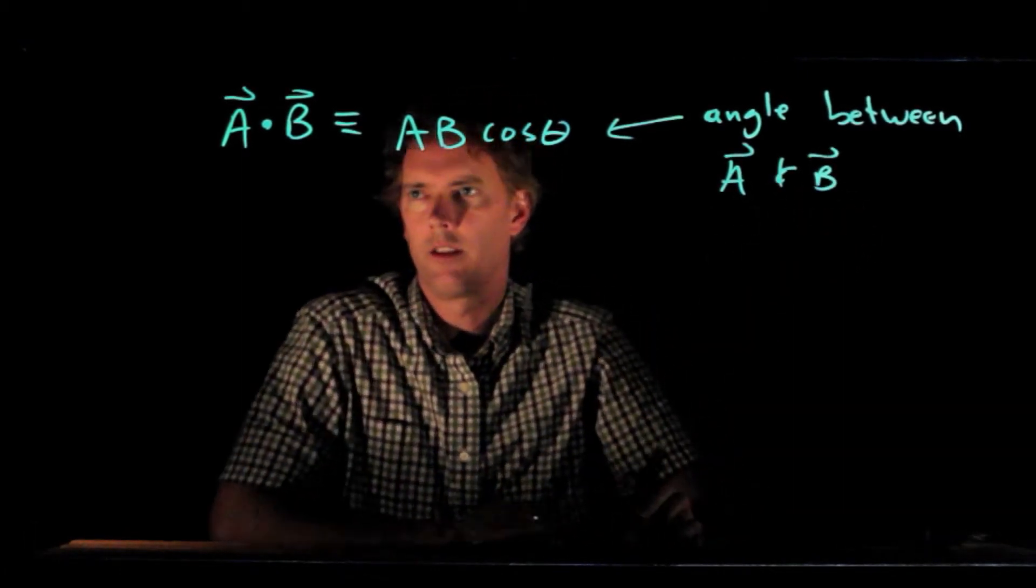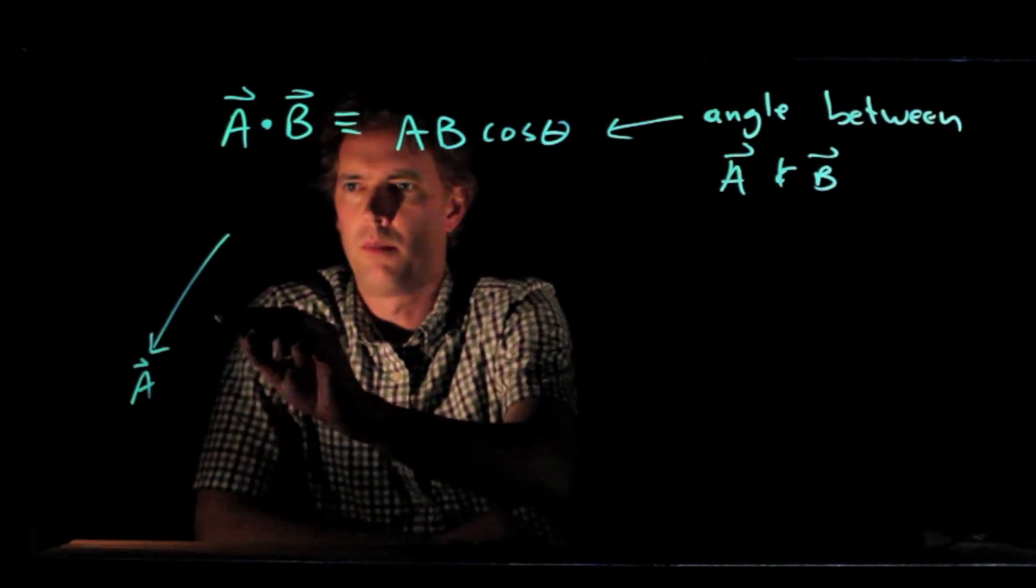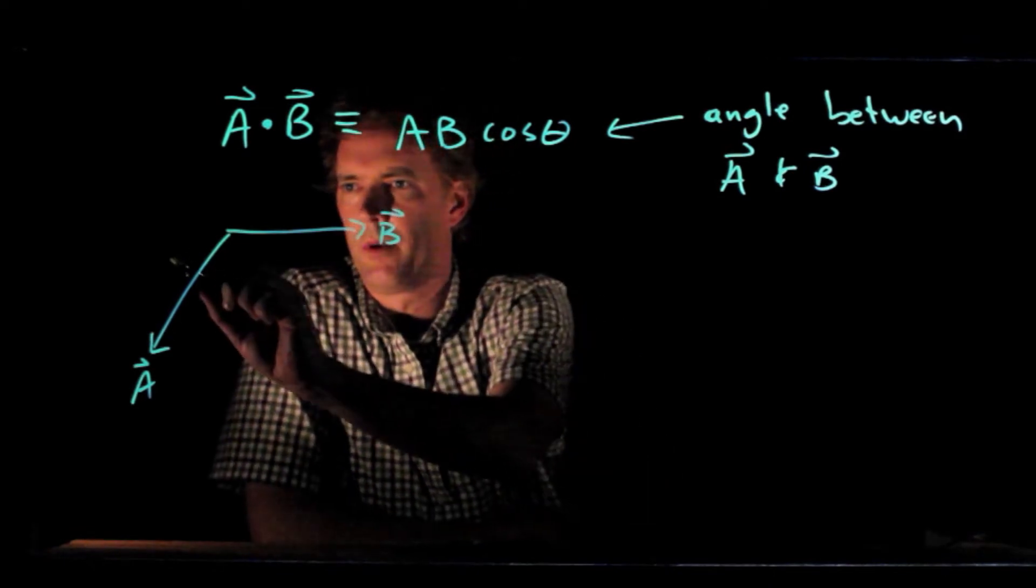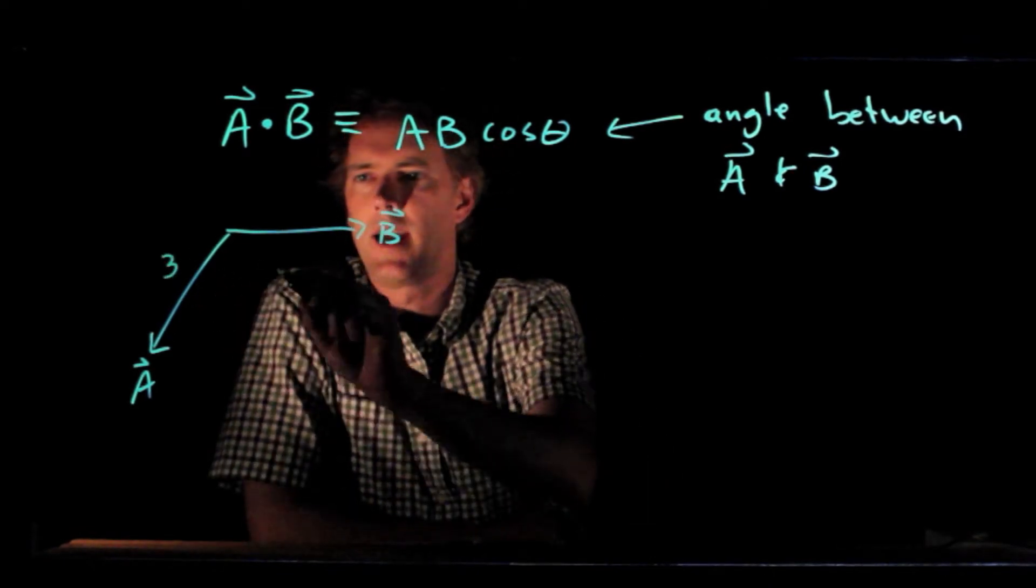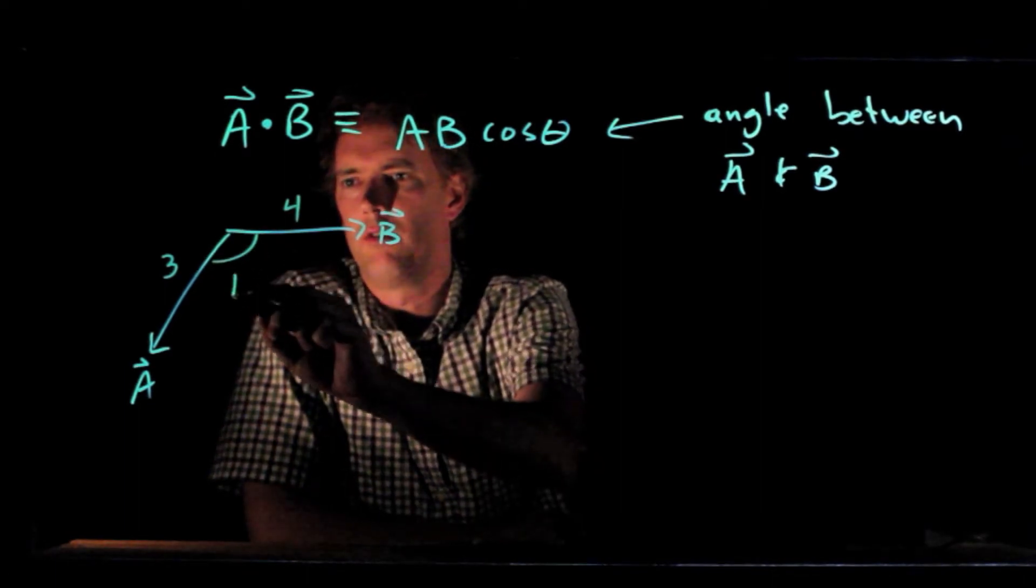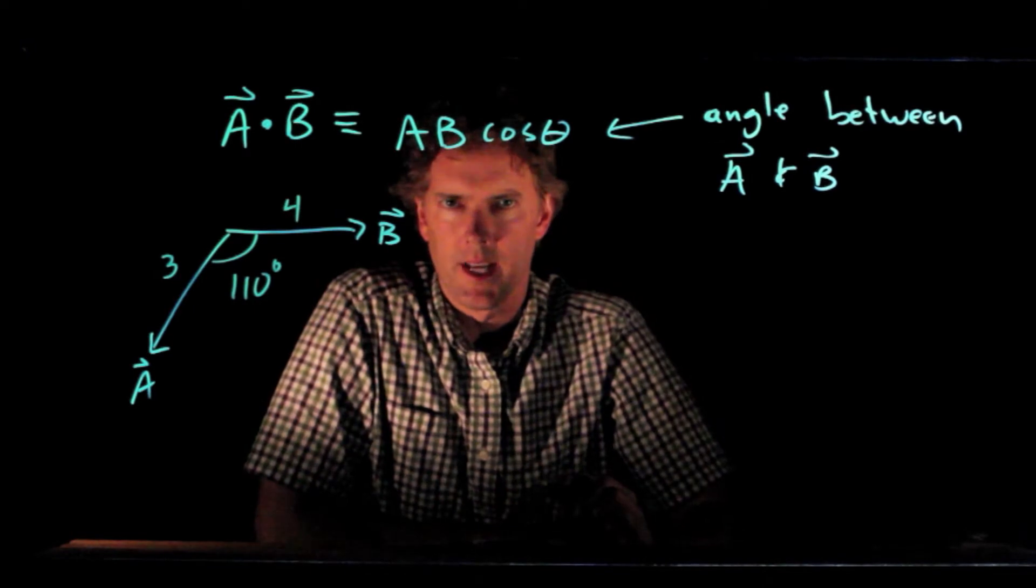Okay, so let's try this for a couple examples. Let's say we have vector A pointing down like so, vector B pointing to the right, and we will give these a couple magnitudes. A has magnitude 3, B has magnitude 4, and let's say that angle is 110 degrees.